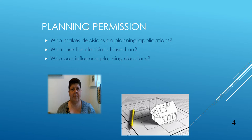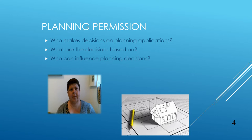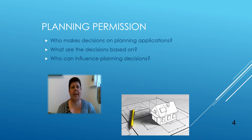This starts with the checking of the information submitted before the application can be validated, then the consultation that the planning department must carry out with neighbours and other organisations like the electricity and water companies, Network Rail, and highways authorities. A report is then prepared that compares the planning application to national, regional and local policies and summarises all the responses to the consultation. The report then makes a recommendation to the councillors on whether the planning application should be accepted or rejected.